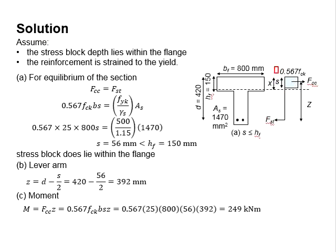Assuming the stress block lies within the height of the flange, that means your s here has to be less than the height of the flange. With that, the stress plot is drawn at the maximum compressive stress equals to 0.567 fck, which is the design strength of the concrete.